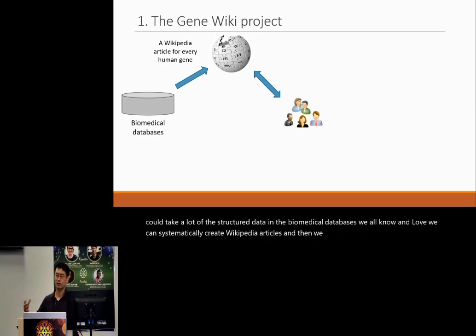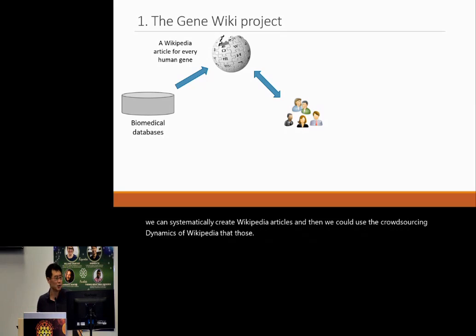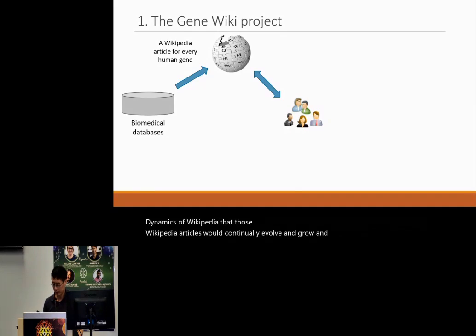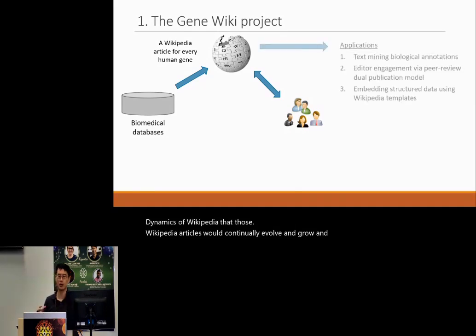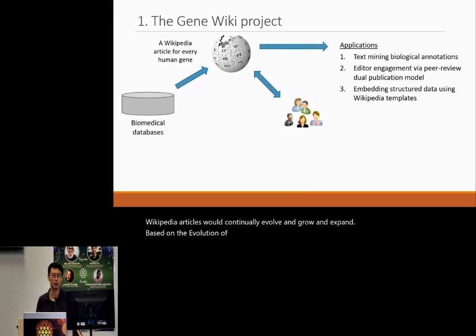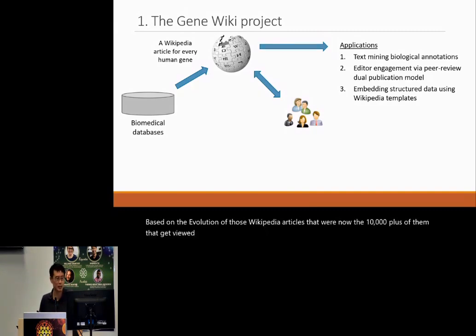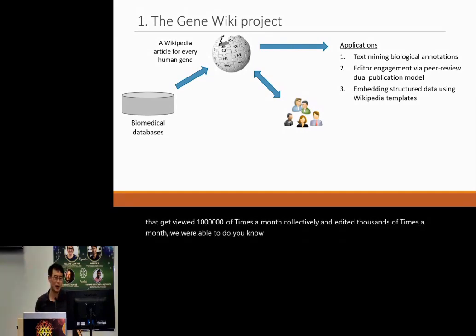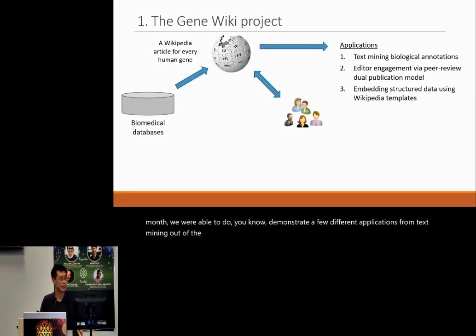One of our thought processes was that we could take a lot of the structured data in the biomedical databases we all know and love, systematically create Wikipedia articles, and then use the crowdsourcing dynamics of Wikipedia so that those articles would continually evolve and grow. We demonstrated a few different applications from text mining out of the contributed text to look for new biological annotations.